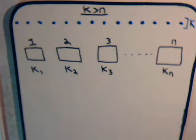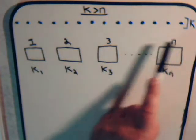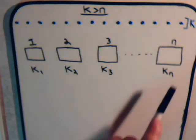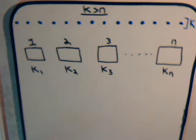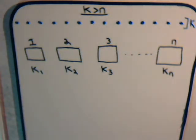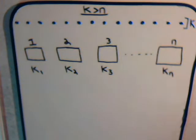This video is example number two of applying permutations to a statistical physics type problem. We're going to consider a case where we have k number of identical objects and we want to place them into n number of boxes, where we have more objects than boxes and we're allowed to put multiple objects in each box. Suppose we have a distribution where box one has k1 objects, box two has k2, box three has k3, and box n has kn objects.